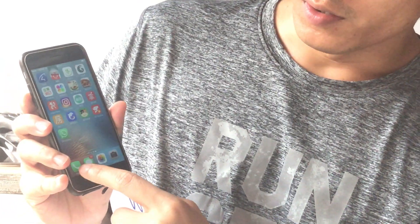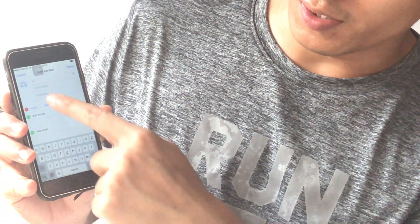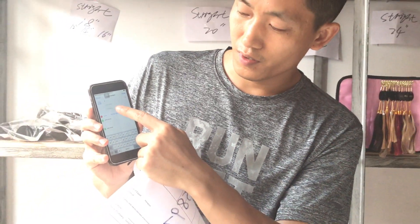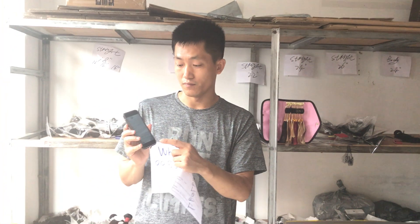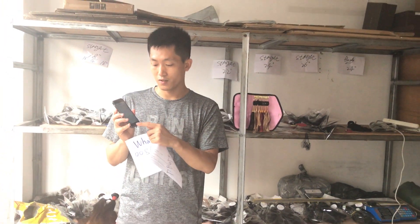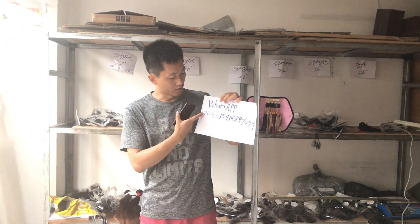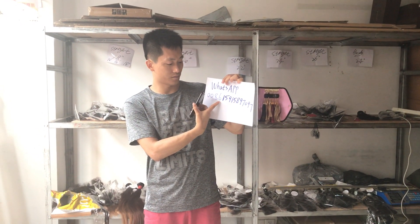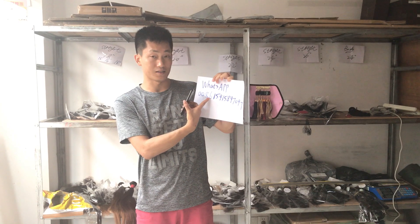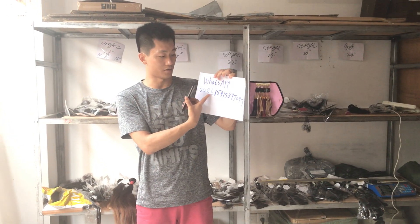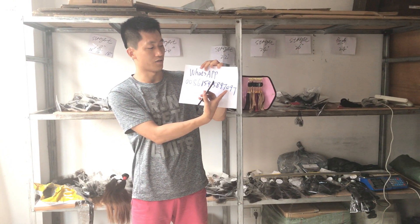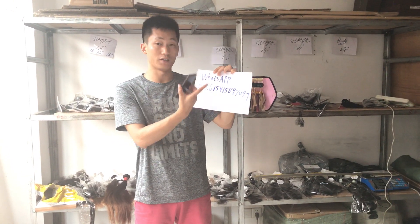Then add my contact to your contact list — the number I just told you. After you save it, you go back to WhatsApp messenger and you can find it. Remember: you need to add the country code 0086. Then type the phone number: 159-158-970-97. Then you are there.